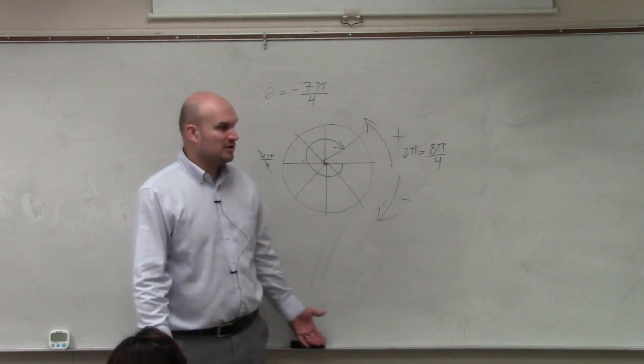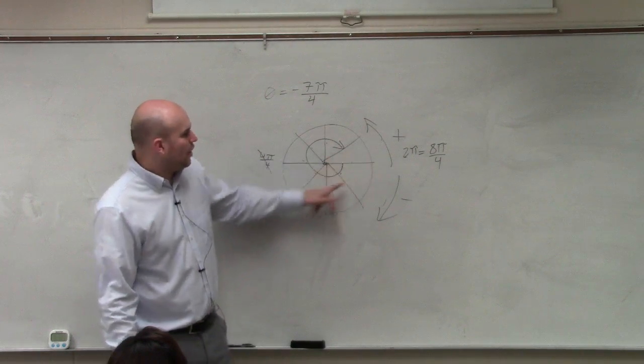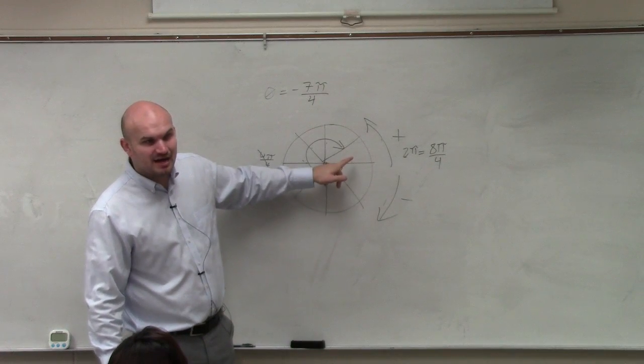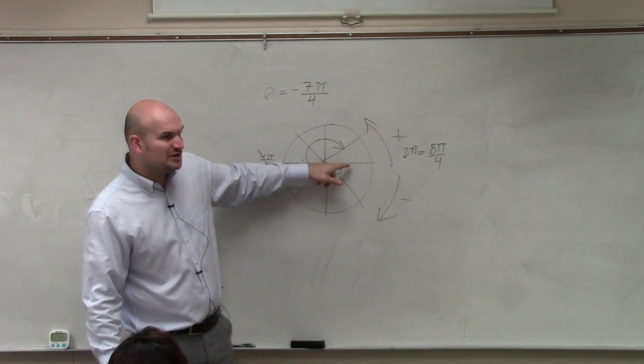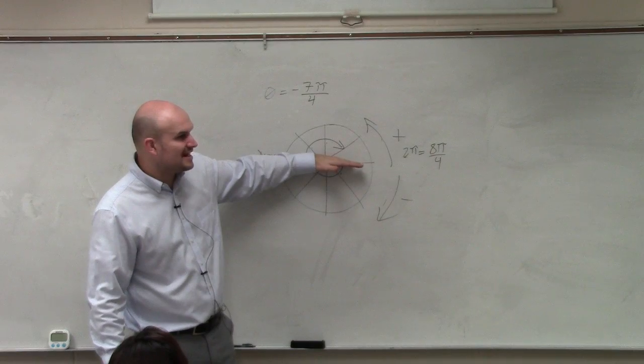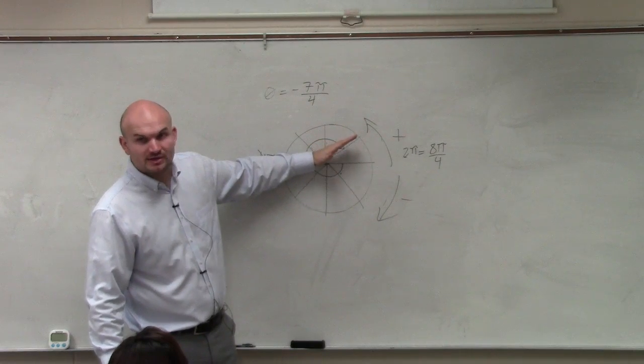Because 8 divided by 4 is 2. So if all the way around the circle is 8π over 4, and we're only going to 7π over 4, that means we're π over 4 short, right?